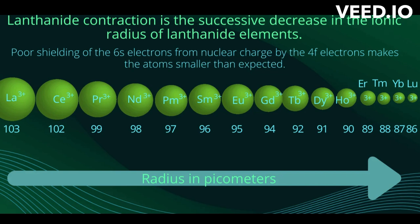The 4F electrons very imperfectly shield each other from the increased positive charge of the nucleus, so that the effective nuclear charge attracting each electron steadily increases through the lanthanide elements, resulting in successive reductions of the atomic and ionic radii.